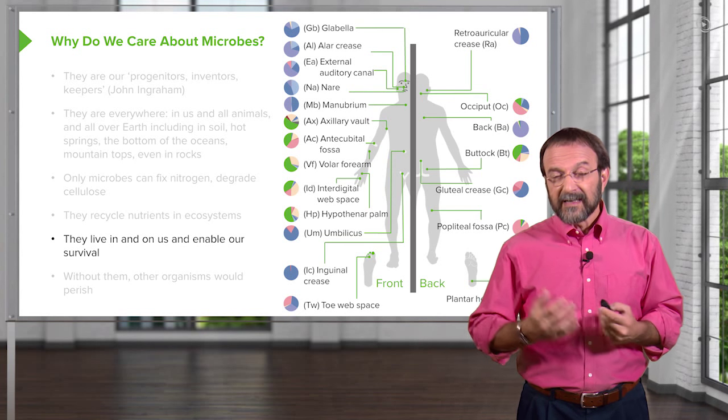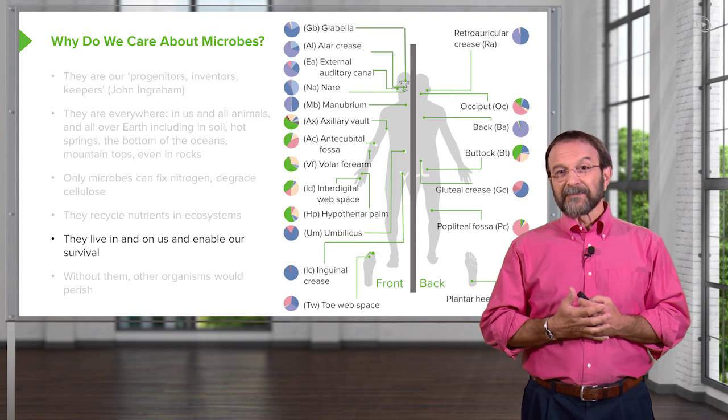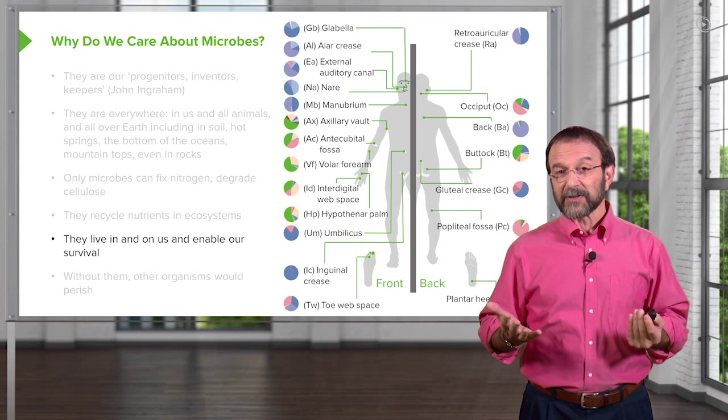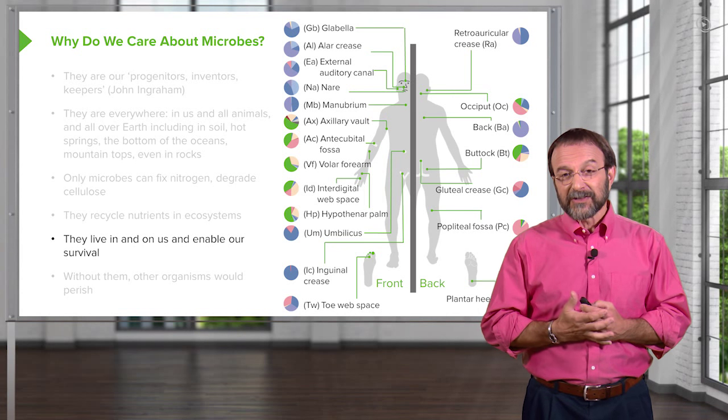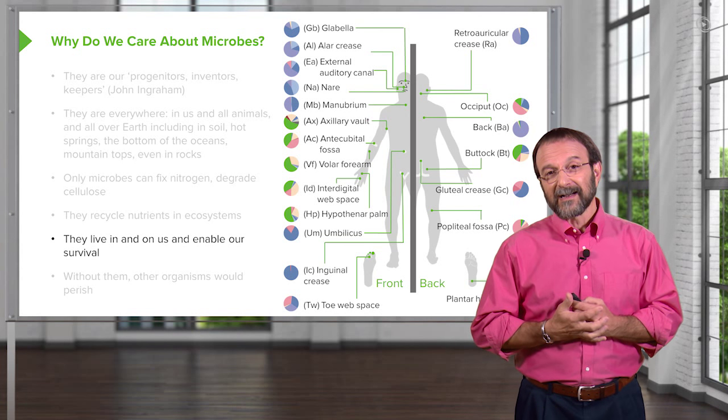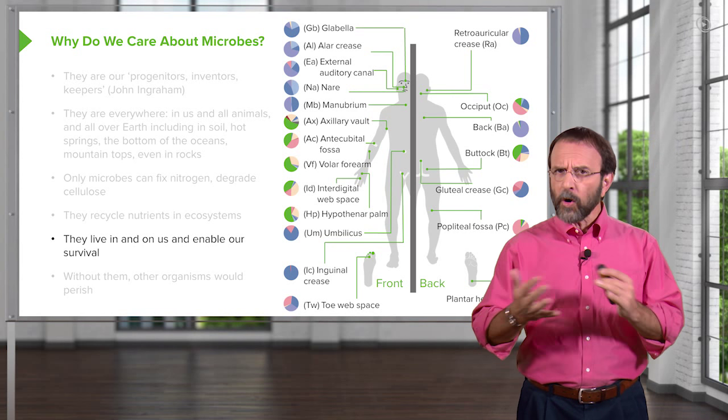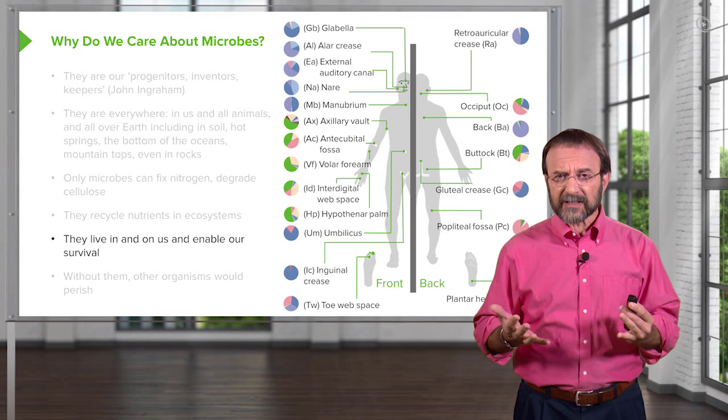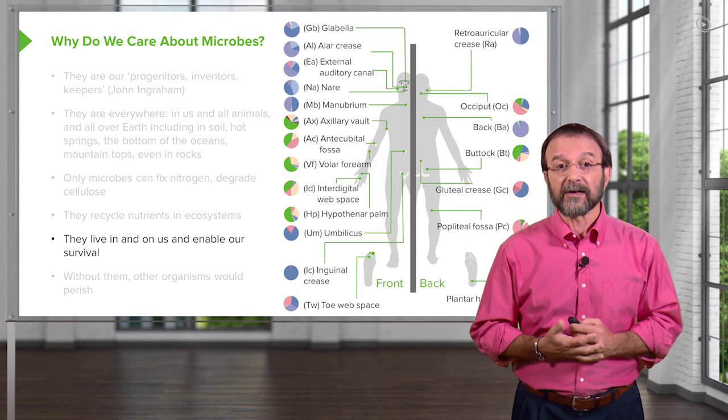And this diagram shows you all the different kinds of bacteria that are located on different parts of our skin alone. And the different colors on the pie chart show you the different colonies or communities of bacteria that are found from your eyes to your hands to your feet. All of these bacteria have a function. They're beneficial for us. We call this our microbiome.